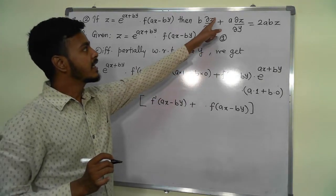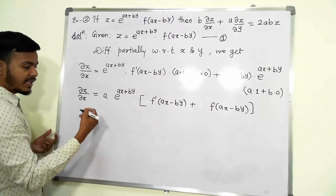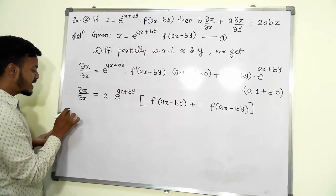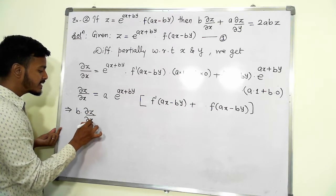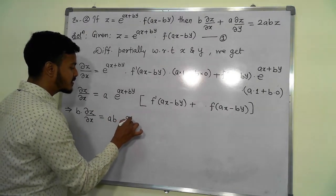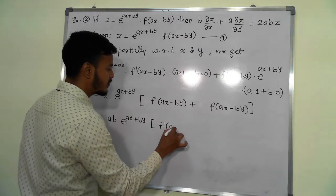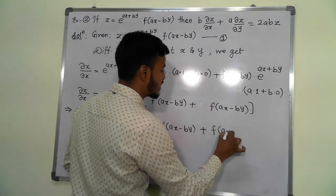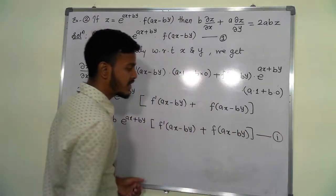Since ∂z/∂x is multiplied by b, we write b times ∂z/∂x equals ab · e to the power (ax + by), in bracket: f′(ax − by) plus f(ax − by). Call this equation number 1.